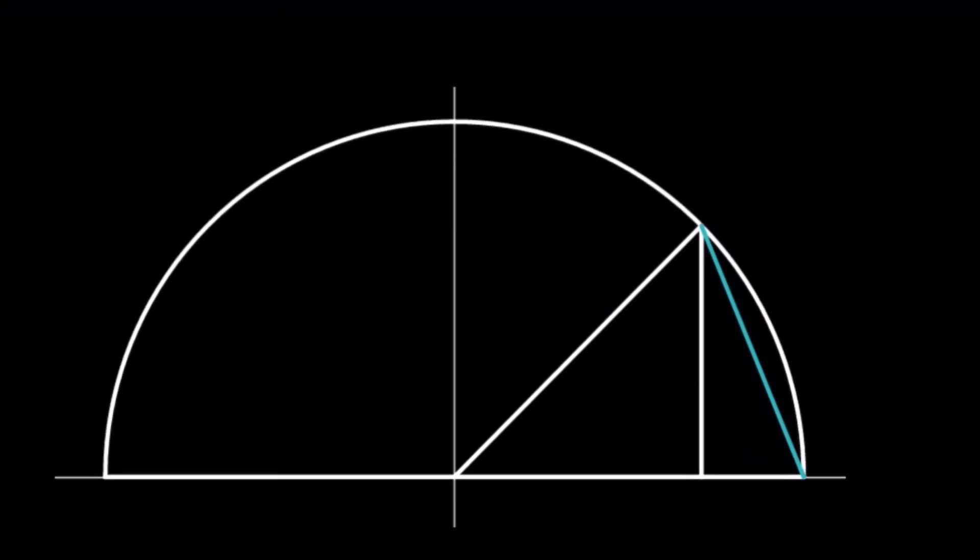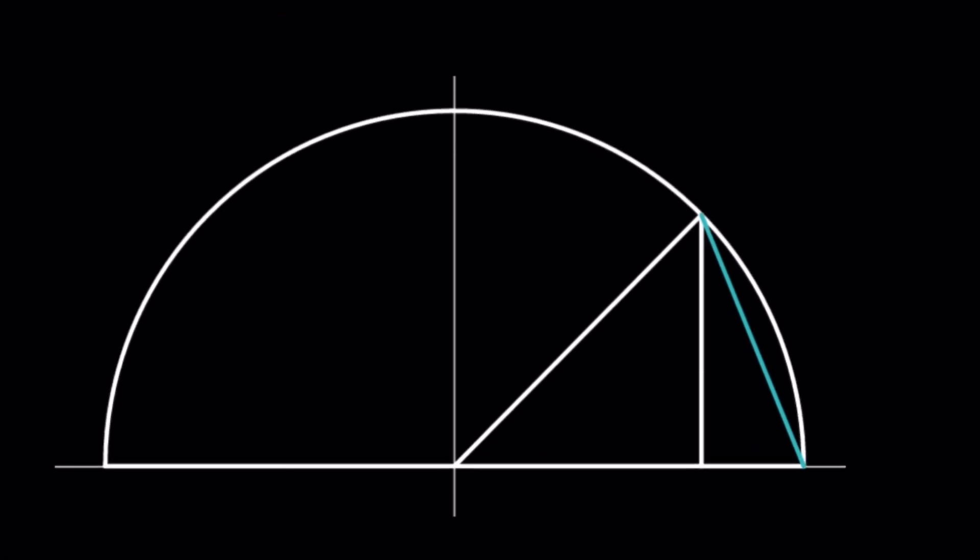So here is my setup for this problem. We have a unit circle. Well, not really, but it's kind of like half of it. So we have a circle whose radius is 1. It's centered at 0, 0, which is the origin. So its radius is 1. That's what matters.